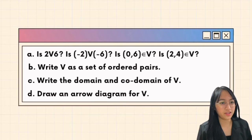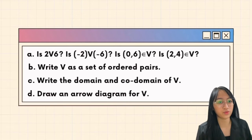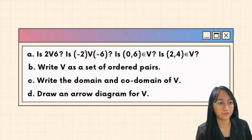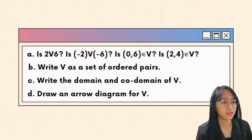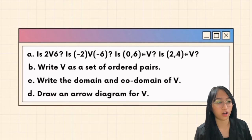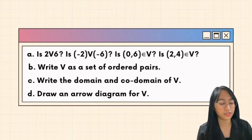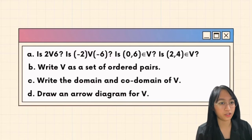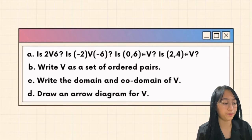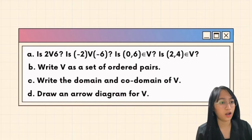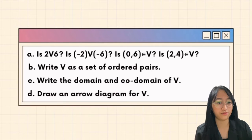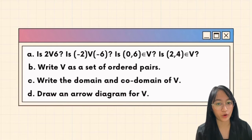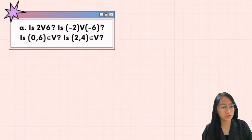The given questions are: letter A — is 2 related to 6? Is negative 2 related to negative 6? Is (0, 6) an element of relation V? Is (2, 4) an element of relation V? Letter B — write V as a set of ordered pairs. Letter C — write the domain and co-domain of relation V. Letter D — draw an arrow diagram for relation V.